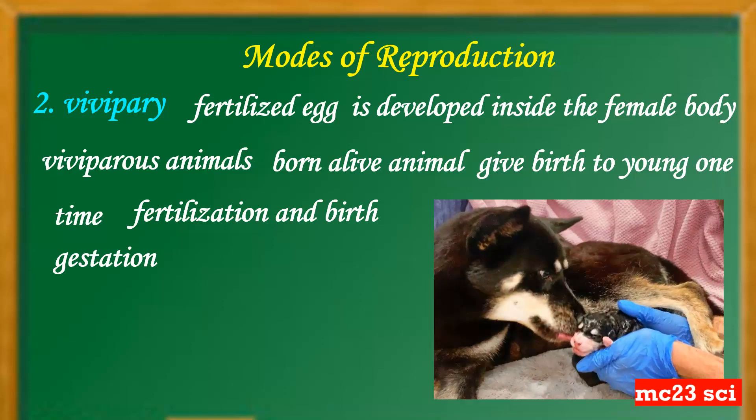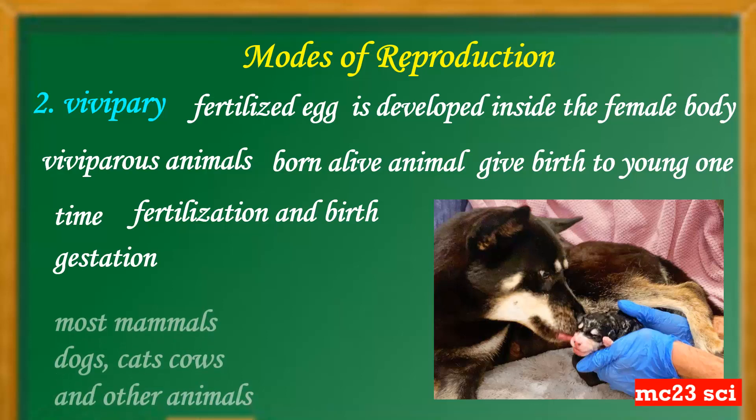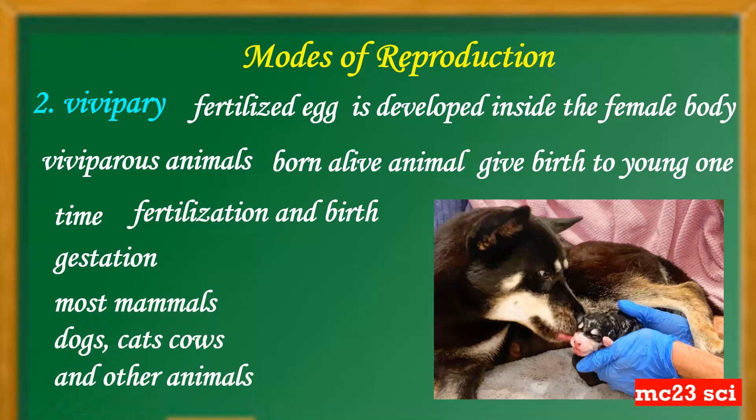For example, the female dog gives birth to a young dog, which is the puppy. Most mammals like humans, dogs, cats, cows, and other animals are called viviparous animals.